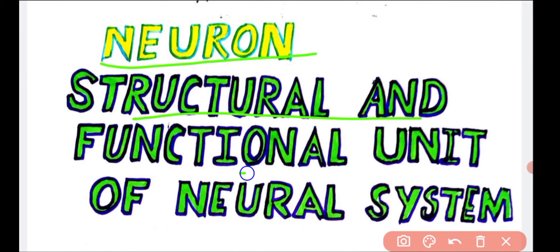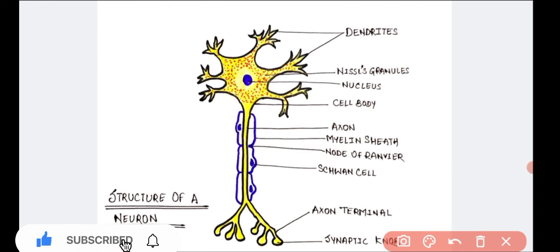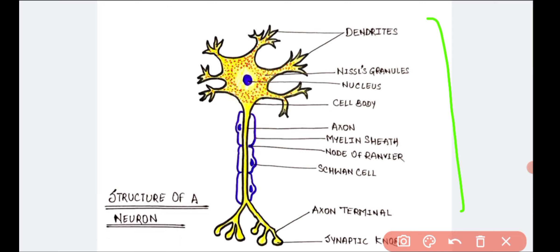Neuron is the structural and functional unit of the neural system. Today we are going to study about the structure of a neuron. A neuron is a microscopic structure composed of three major parts: the cell body, dendrites, and axon.